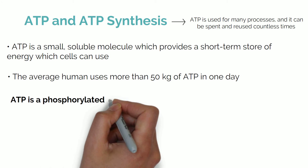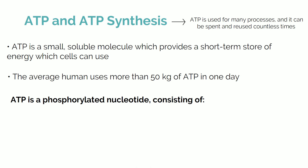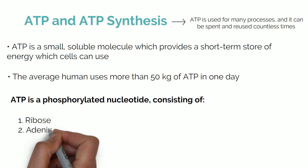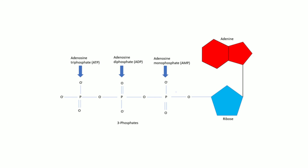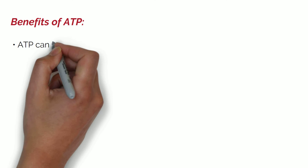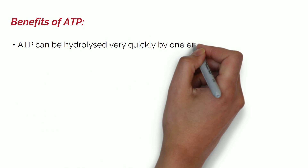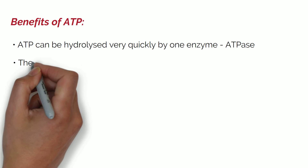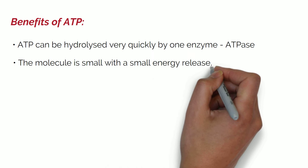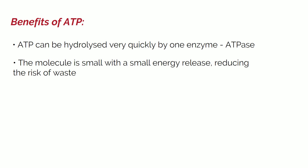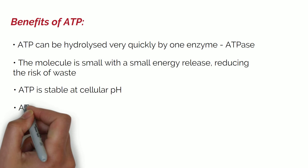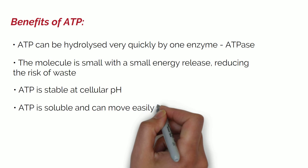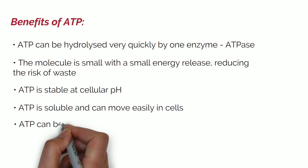ATP is a phosphorylated nucleotide consisting of ribose, adenine base and three phosphate groups. The use of ATP for energy is beneficial because ATP can be hydrolyzed very quickly by one enzyme called ATPase. The molecule is small with a small energy release, reducing the risk of waste. ATP is stable at cellular pH, soluble and can move easily within the cell, and can be recycled and reused.